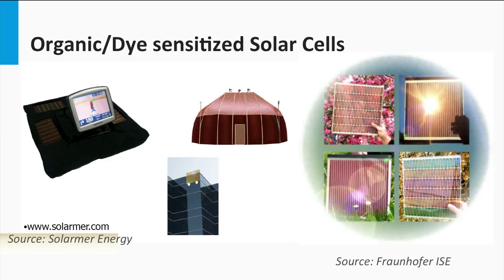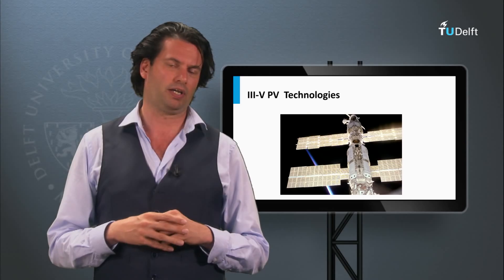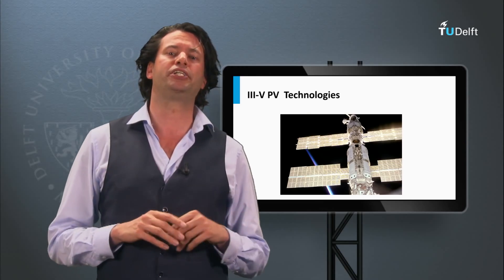Another thin film PV technology is based on organics, also referred to as the plastic solar cell. The absorption and charge transport in the solar cell occurs in conductive organic polymers or molecules. The dye-sensitized solar cell is a kind of photoelectrochemical system in which a semiconductor material based on molecular sensitizers is placed between a photoanode and an electrolyte. We will discuss both the organic and dye-sensitized PV technology in week 5.